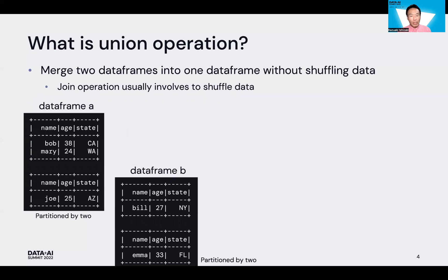Do you know union operation? This is one of the functions in Spark SQL. Union operation can merge two data frames into one data frame without shuffling data. Join operation is very famous in Spark SQL — it merges two data frames and generates one new data frame. However, join operation usually involves shuffling data among partitions.